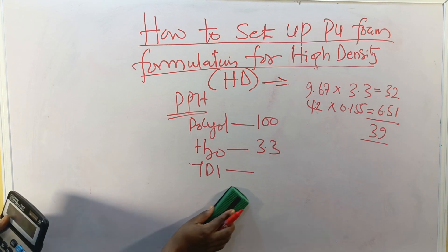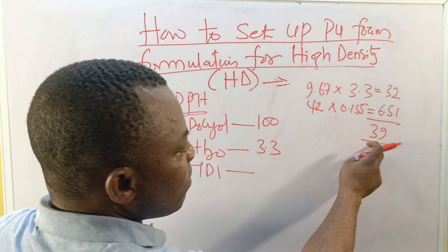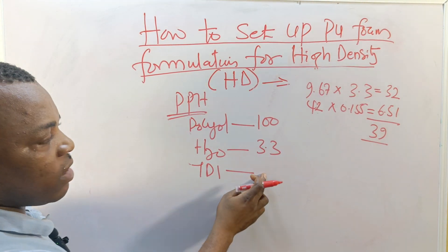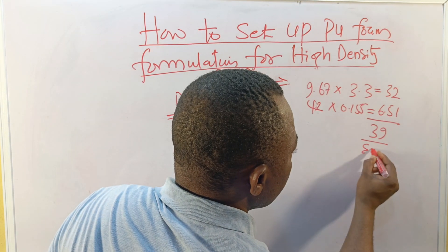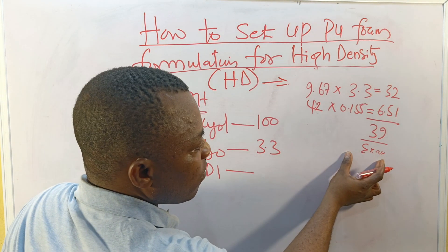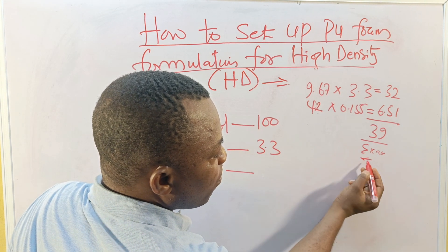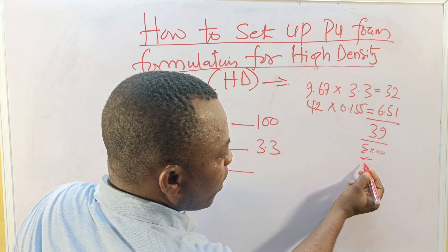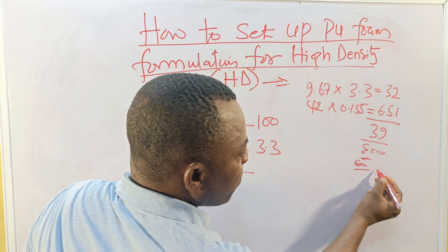We add it, add 82, so this is giving us 39 in respect to TDI.